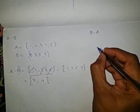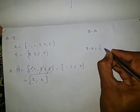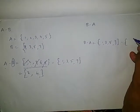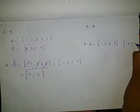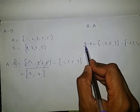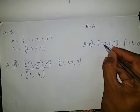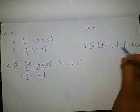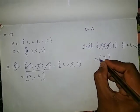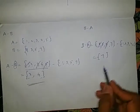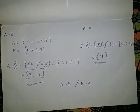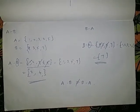Next, B minus A. B = {1, 3, 5, 7} minus A = {1, 2, 3, 4, 5}. In this case we check only the first set, which is B. 1 is in A — remove it. 3 is in A — remove it. 5 is in A — remove it. 7 is not in A — keep it. So B minus A = {7}. If we observe, A minus B is not at all equal to B minus A.